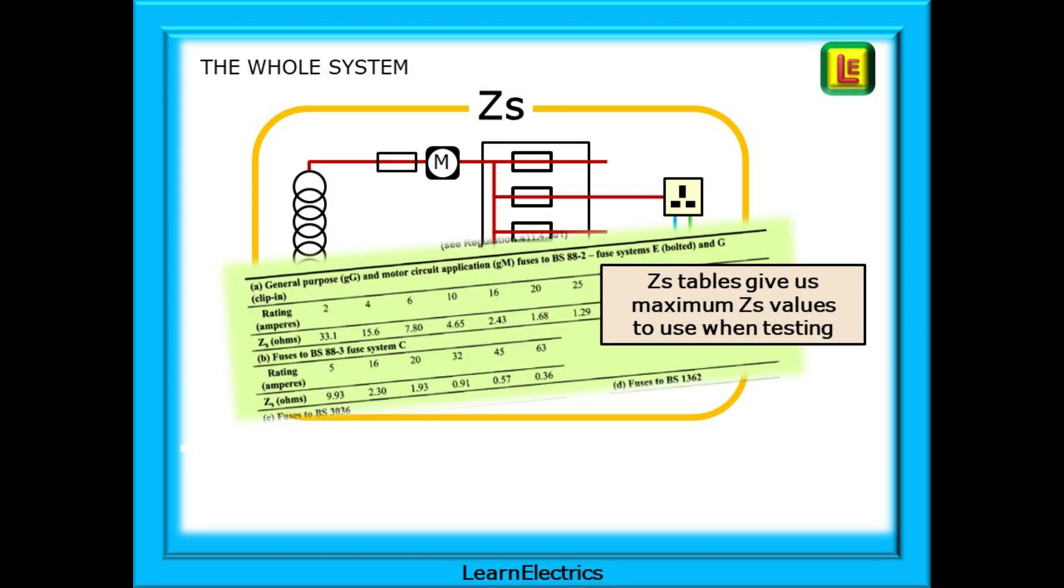To start with, why do we want to know ZS, the impedance of the whole system from every point of use? So that we can compare the test results to data shown in the wiring regulations and the on-site guide. If the impedance is less than the figures supplied for each fuse or breaker size, then we are assured that the safety devices, the fuses and breakers, will operate as required if a fault occurs.